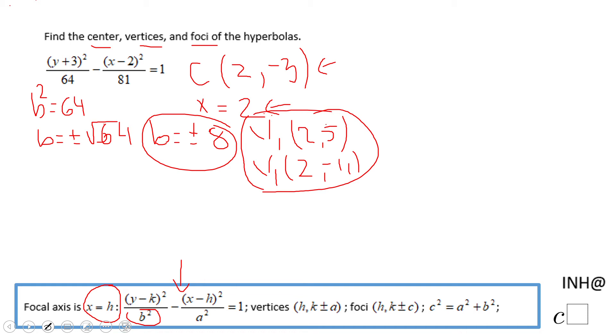For finding the foci, we need to find c squared first. c squared will be a squared plus b squared, so 64 plus 81, which is 145. So c will be plus or minus the square root of 145.